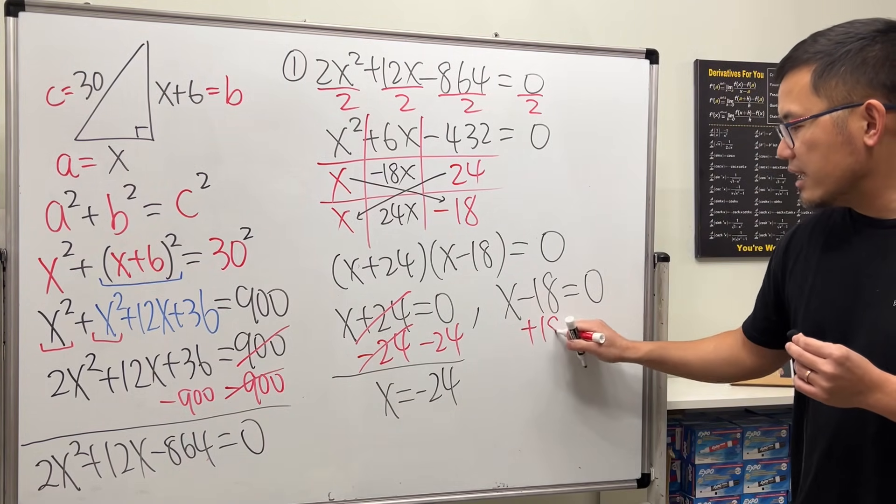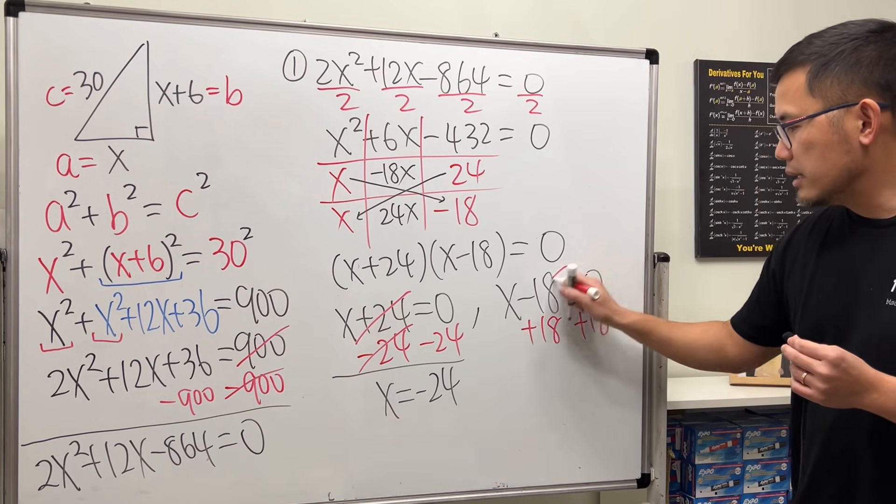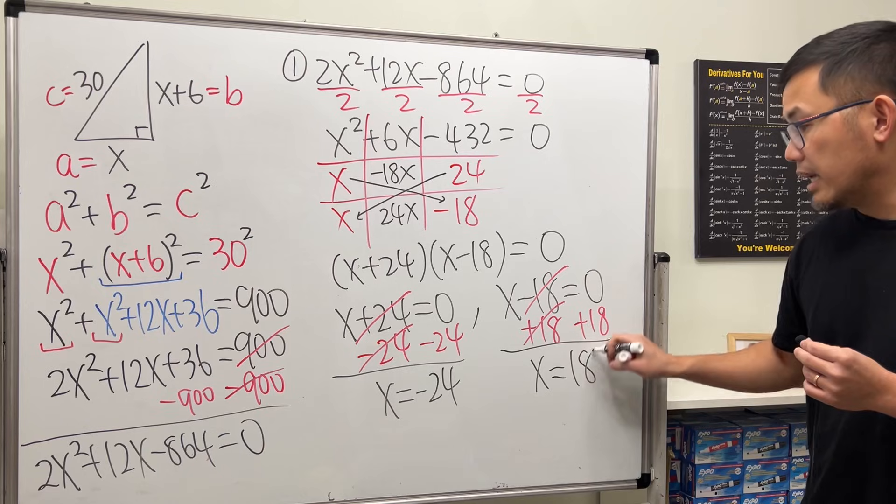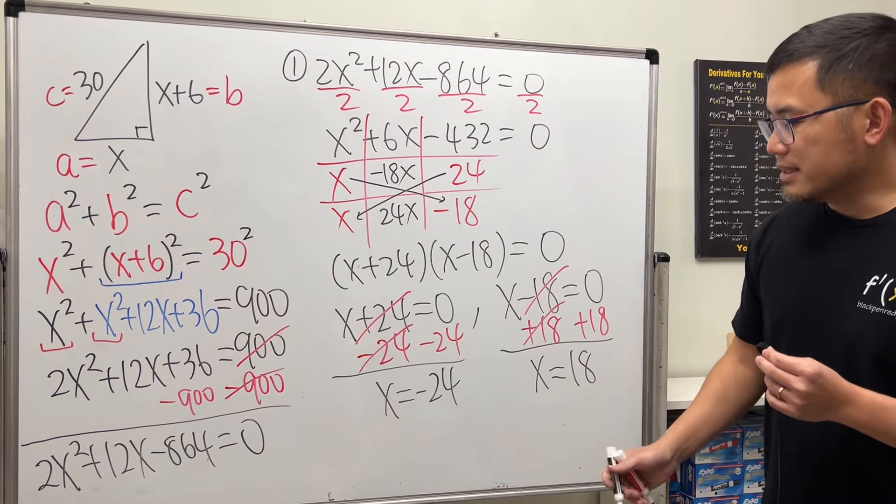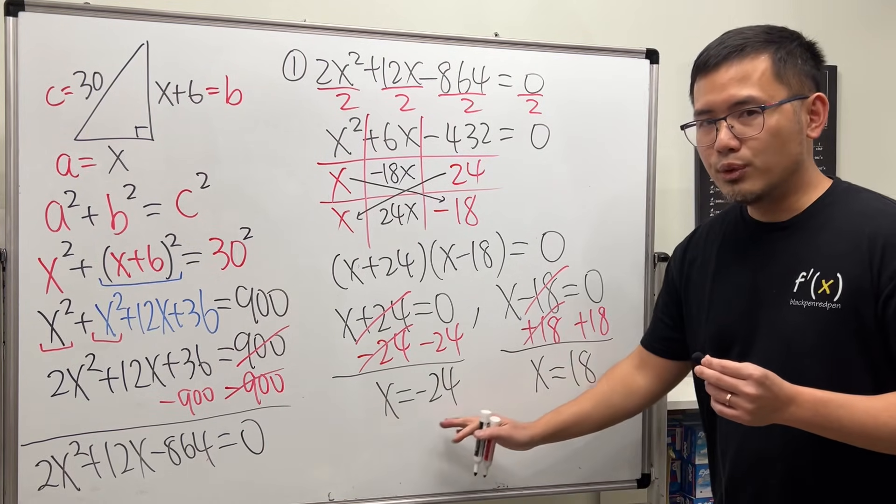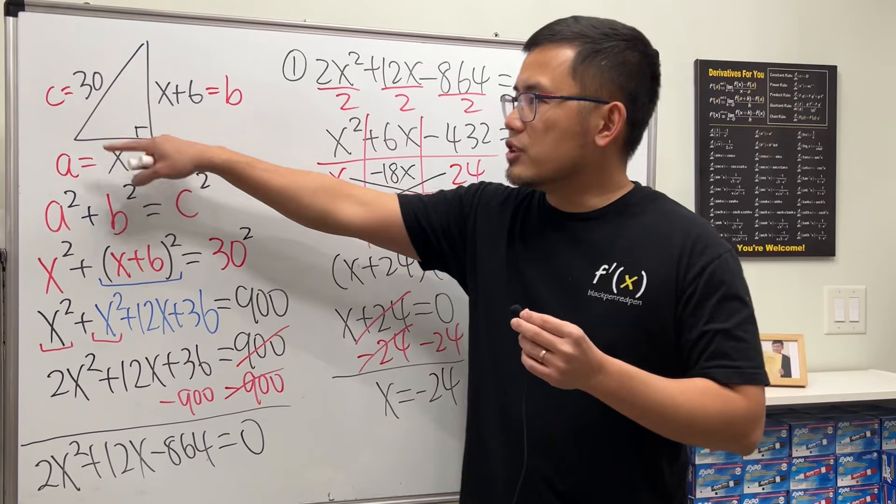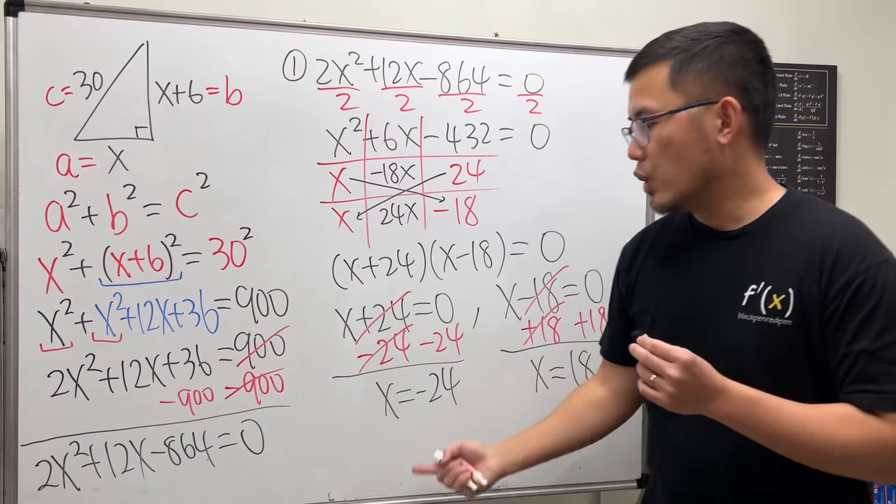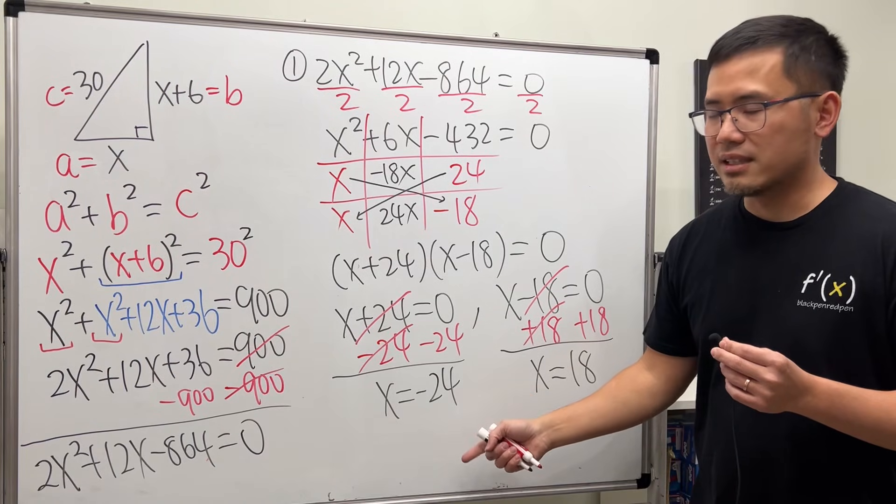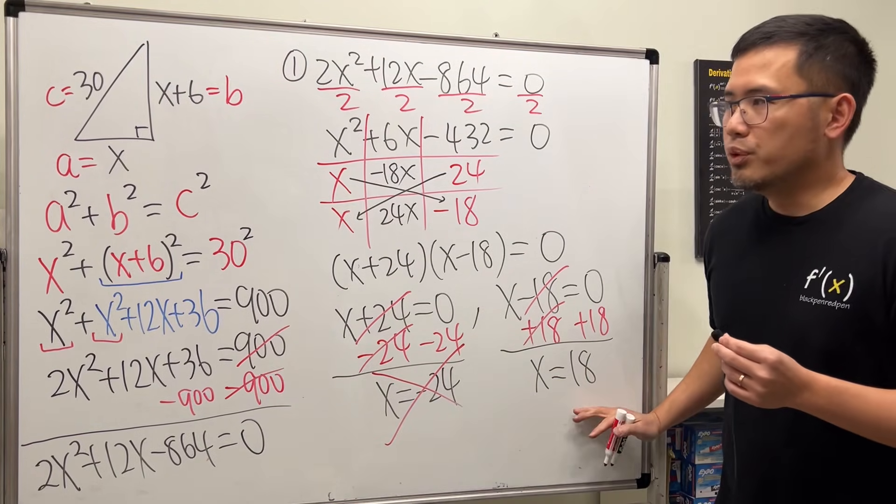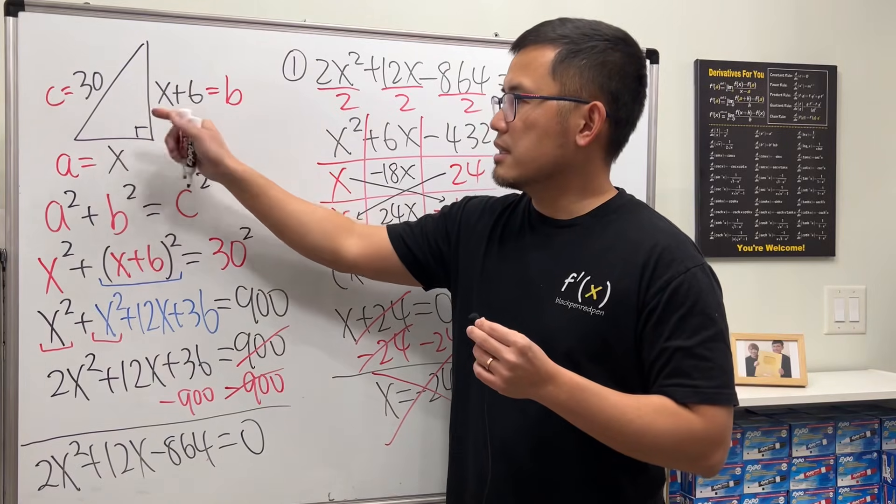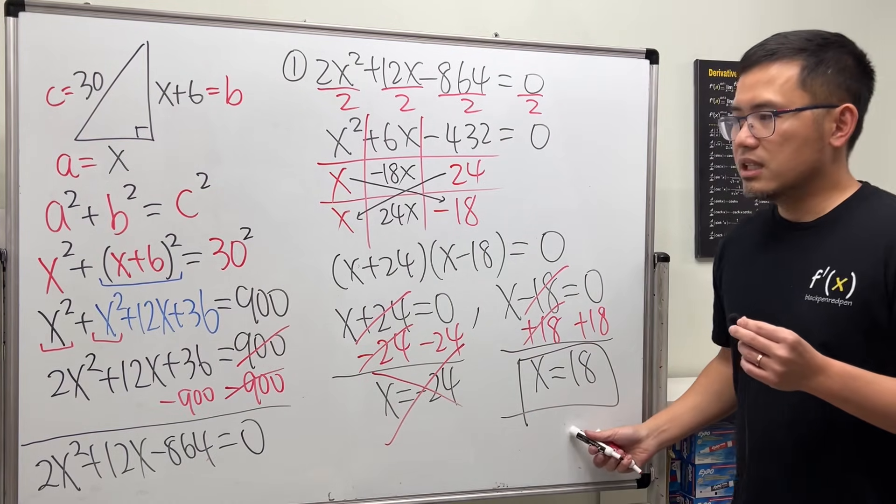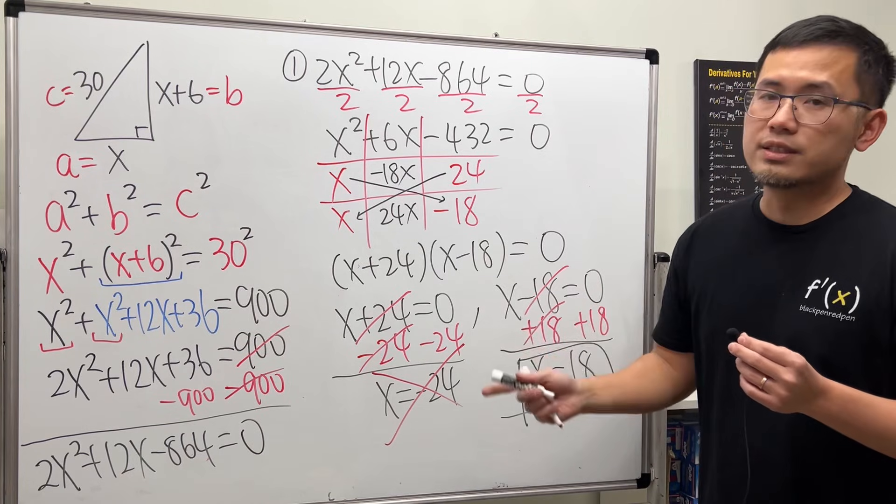Right here, we add 18 on both sides. They cancel. And then, right here, we will just have x = 18. All right. It seems that we have two answers, but be careful. This is the geometry question. x is the length from here to here. We cannot have negative lengths. So, get rid of that. But, if you put 18 into this x and that x, it works wonders. So, x = 18 is the answer for this question.